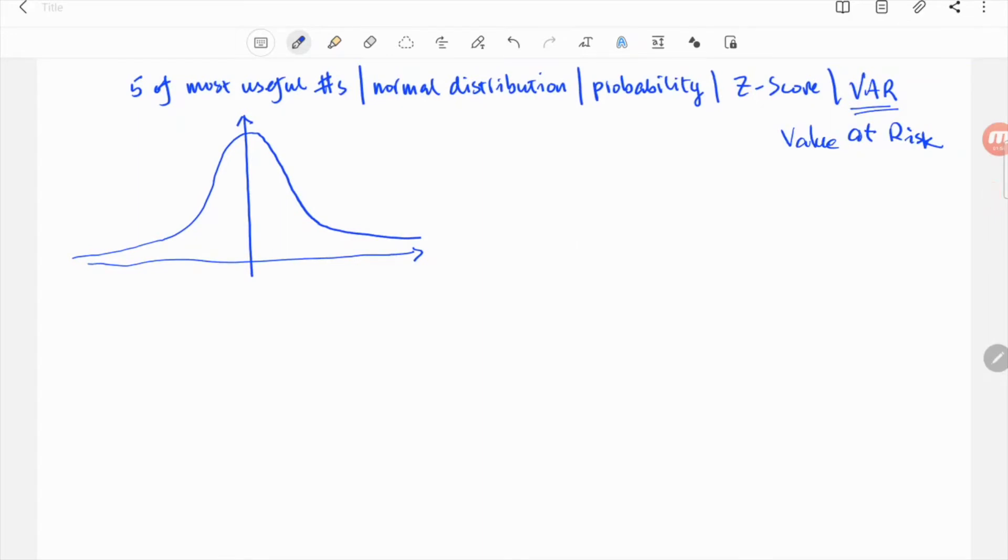If the standard deviation is sigma, a natural question is what is the total probability of the daily return landing inside plus minus 1 sigma, 2 sigma, 3 sigma, or its complement, what is the total probability of the daily return better than 2 sigma or worse than 3 sigma. The first three numbers on the list are exactly those.